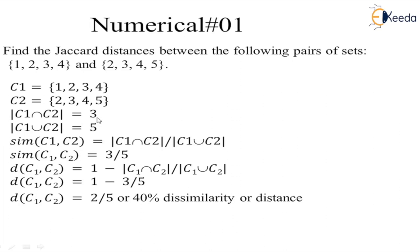So similarity between C1 and C2 is 3/5. As distance is nothing but 1 minus intersection divided by union.